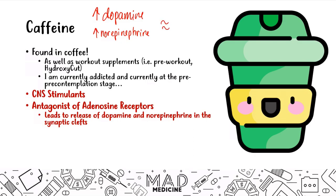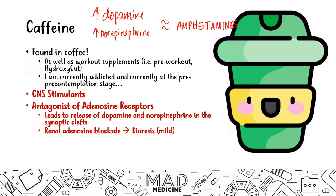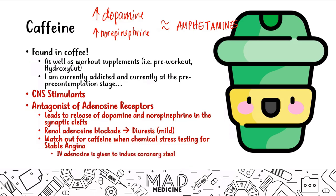You want to watch out for caffeine when chemical stress testing is done for stable angina. IV adenosine is usually given to induce the coronary steal phenomenon when evaluating stable angina, and caffeine is going to block these effects. So if a patient with stable angina has a negative chemical stress test, it could be because they have been taking caffeine.